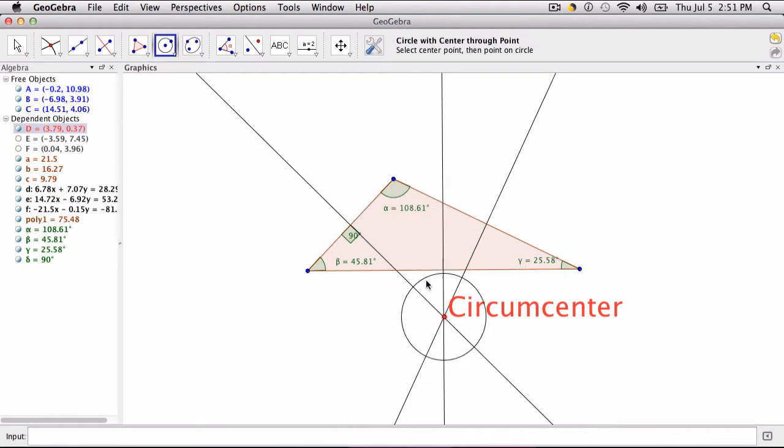You can choose any vertices here. Obviously, well, not obviously, but you can choose any vertices of the triangle here to complete the circum-circle.